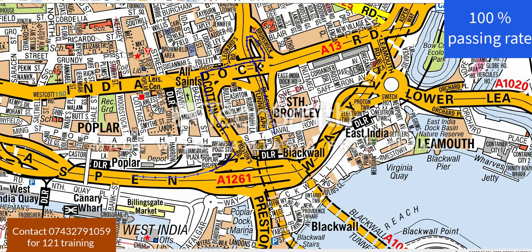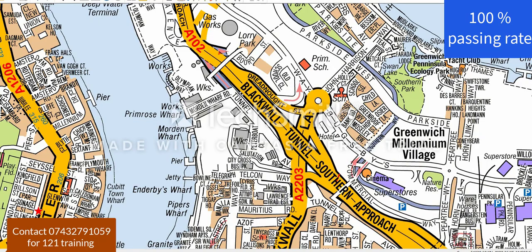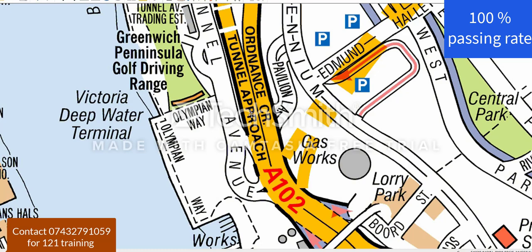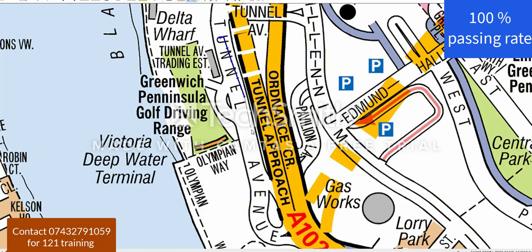Let's do the southern approach now. So this is the southern approach and I need to find the tunnel approach. This is the tunnel approach — this is the point where we can enter into the tunnel from the southern approach. Your green point could be anywhere. Let's say if you're coming from here, you're going to stay on the left-hand side. A lot of people make the mistake of going outside from here — you cannot do that, you're going to get zero marks.